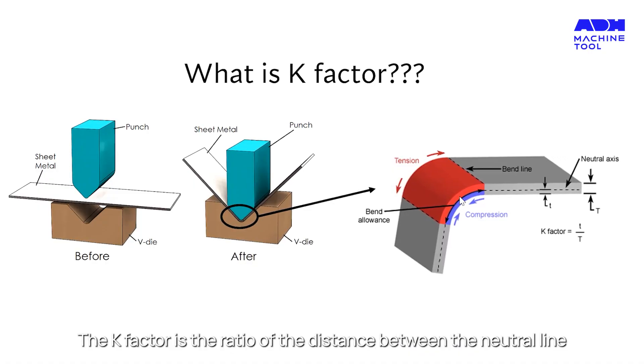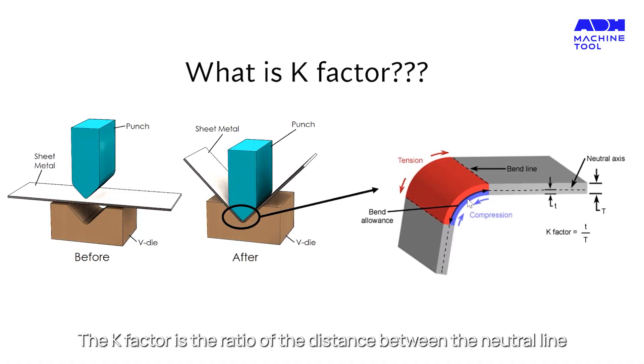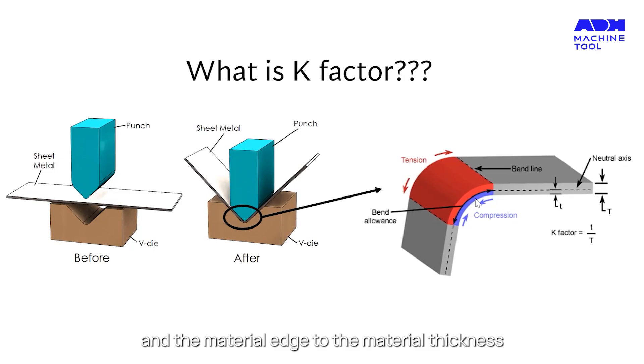The K factor is the ratio of the distance between the neutral line and the material edge to the material thickness.